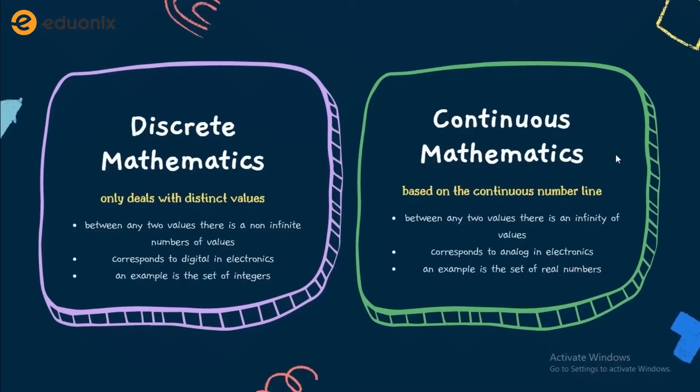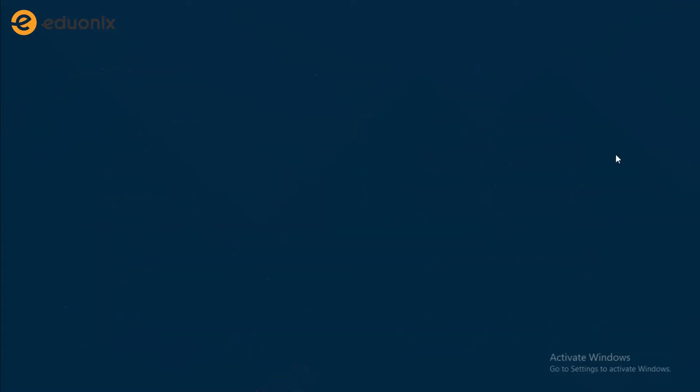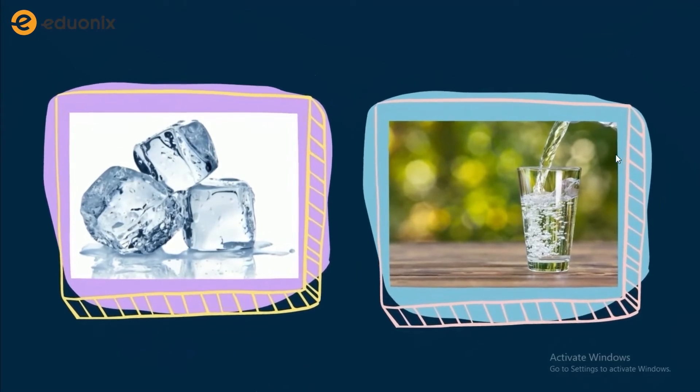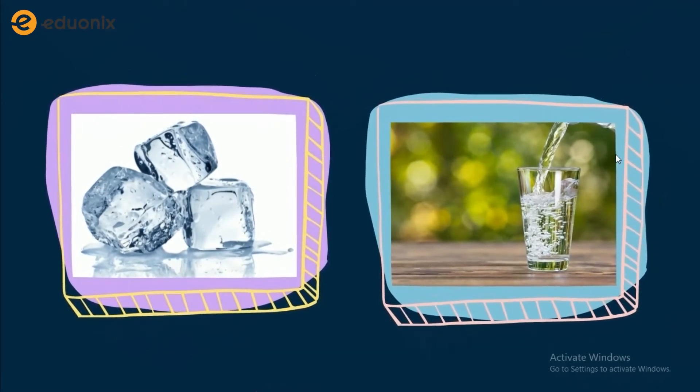Another way I like to explain the difference between continuous mathematics and discrete mathematics: let's say you want to deal with water. There are two types — water and ice cubes. I like to explain the difference between discrete mathematics and continuous mathematics as the difference between pouring a specific amount of water and putting a specific amount of ice cubes. No matter how hard you try, between every two amounts of water you can still pour another amount of water in between them. If you have this much water and this much water, there's still an infinite amount of water that you can pour.